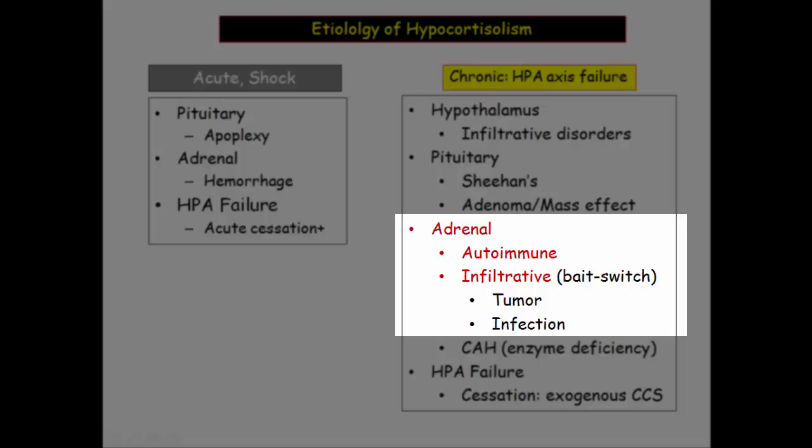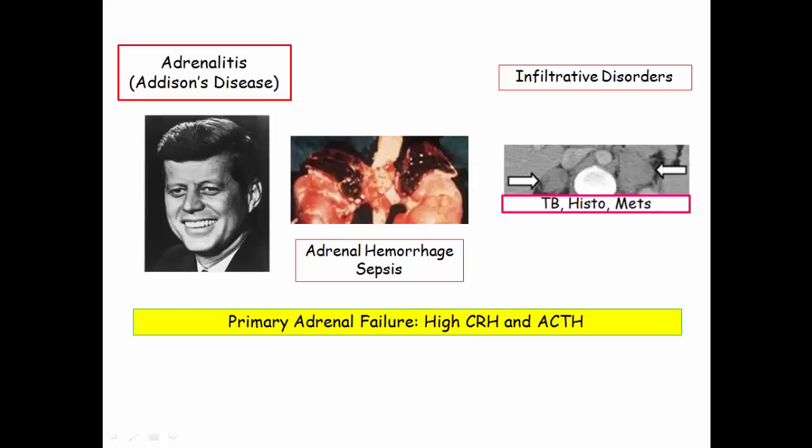We've already seen examples of adrenal failure from infiltrative disorders. I refer to these as the bait and switch — you're reading a vignette that looks like a straightforward lung cancer question, then they pull the switch and you are dealing with adrenal insufficiency. We navigated these muddy waters during our discussion of hyponatremia. Be familiar with these diseases and their association with hypocortisolism.